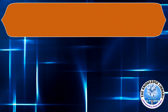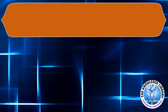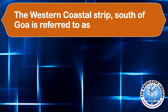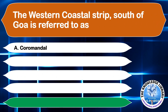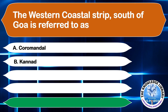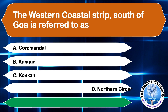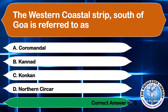The western coastal strip south of Goa is referred to as: A. Coromandal, B. Kannad, C. Konkan, or D. Northern Sirkar. The correct answer is option B, Kannad.